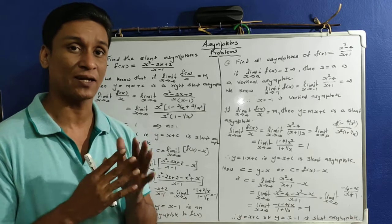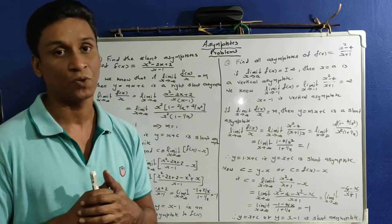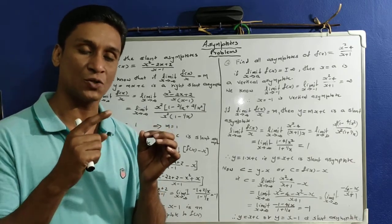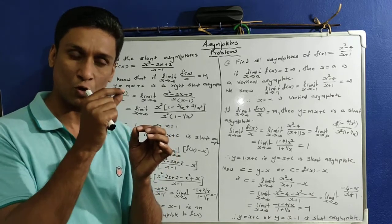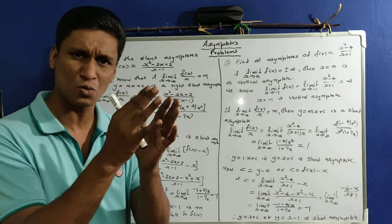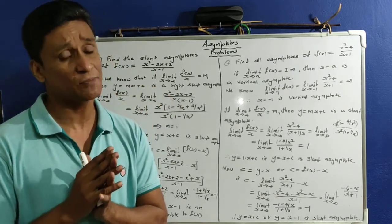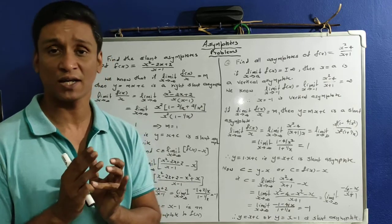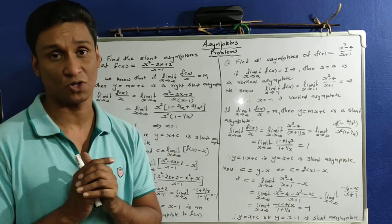An asymptote is a straight line that touches the curve at infinity. When a curve goes to an infinite branch, the distance between the curve and the straight line approaches 0. There are three types: vertical asymptote, horizontal asymptote, and slant asymptote.